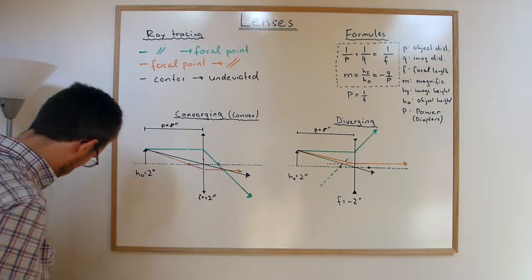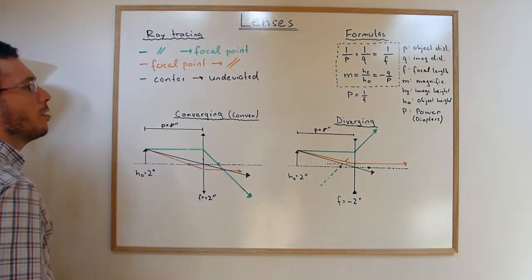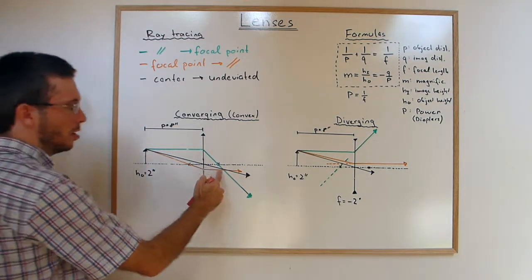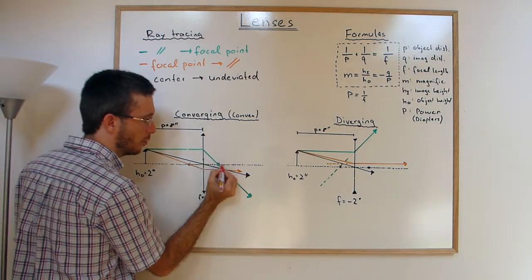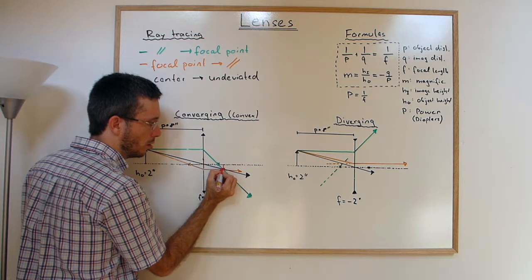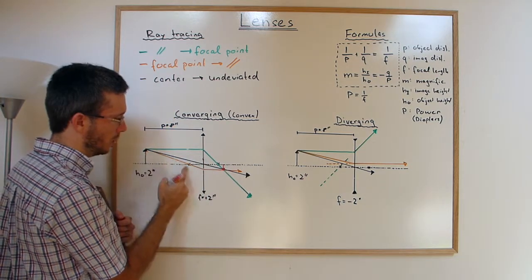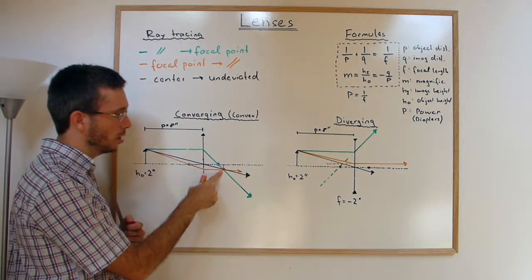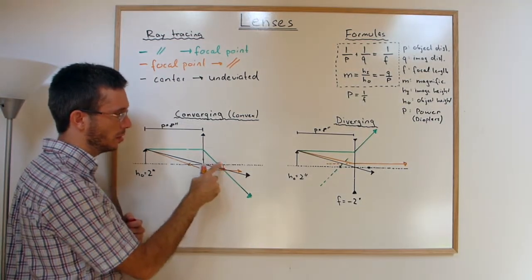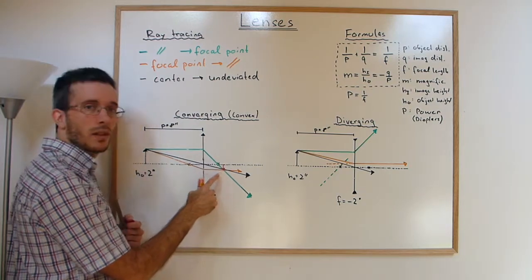Now in both cases, we just found the image. The image is where all the rays meet again. So here in the case of the converging lens, for an object that was placed behind the focal point, I got a real image. Real because the rays really meet here. And it's upside down.